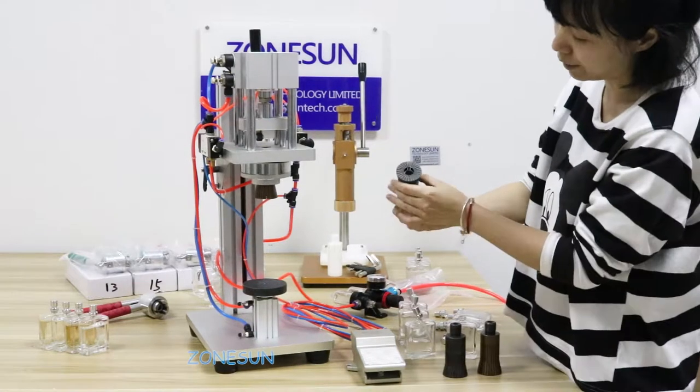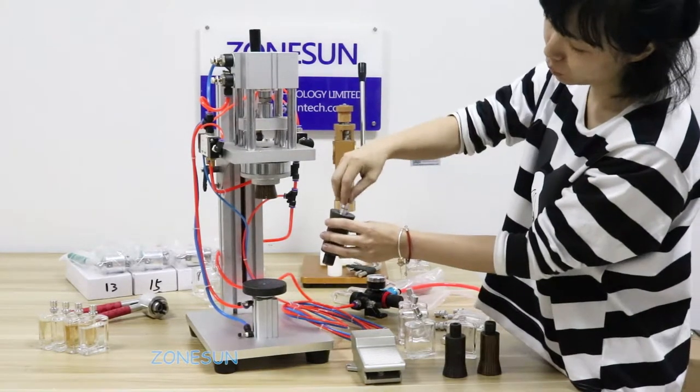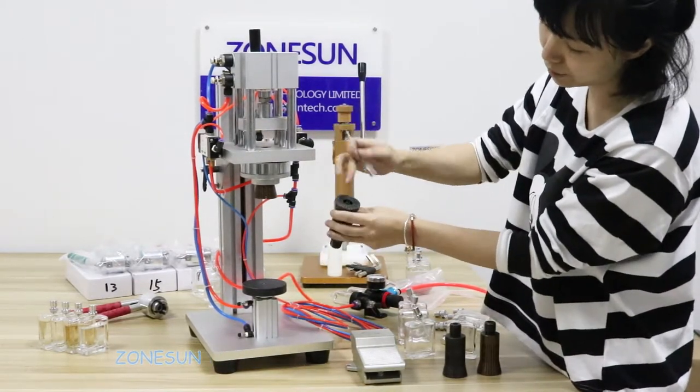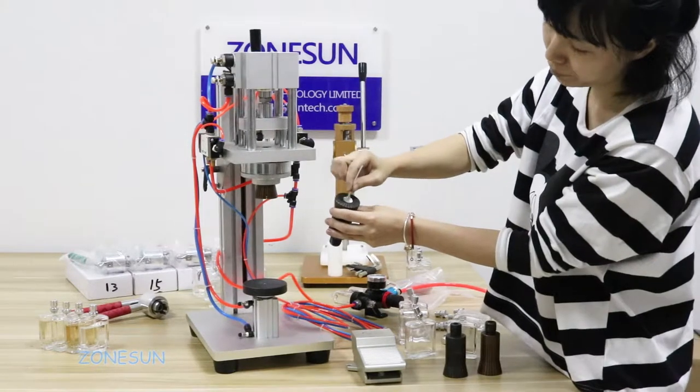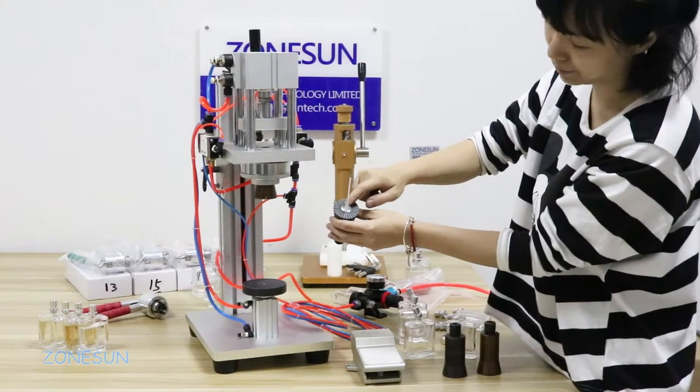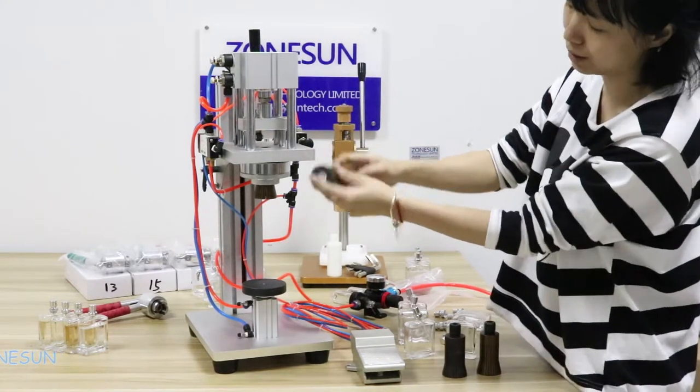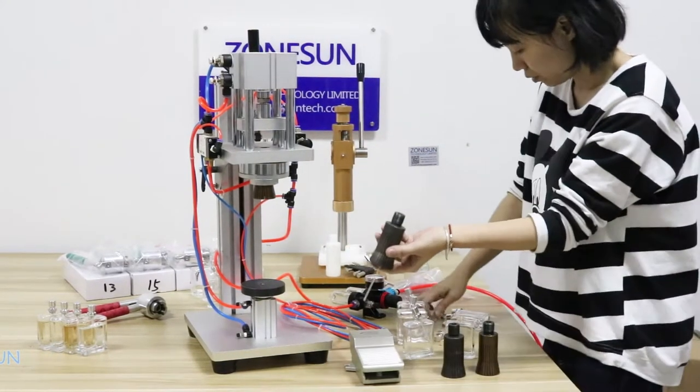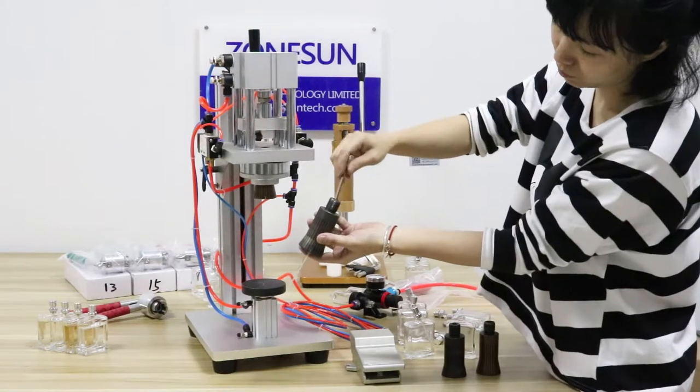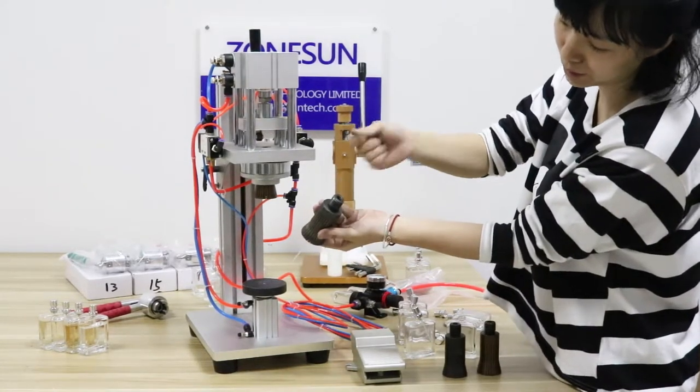When you're sliding the capping head, make sure the size is correct. It needs to be like this. When you put it on, it should be flat. If it's not, you can adjust the size here with an Allen key.